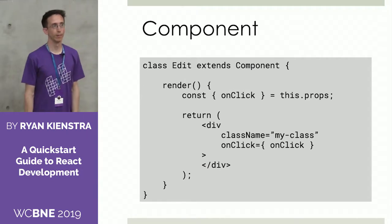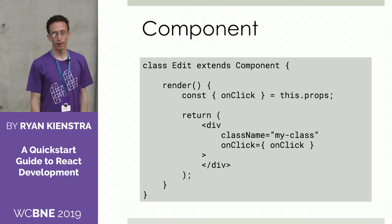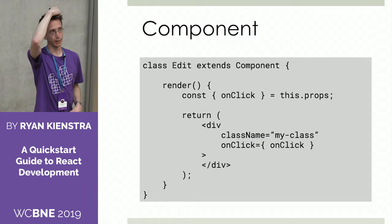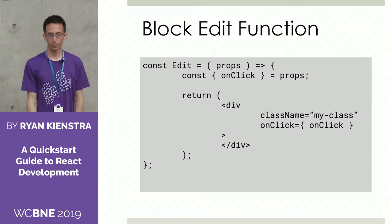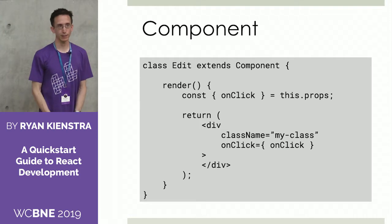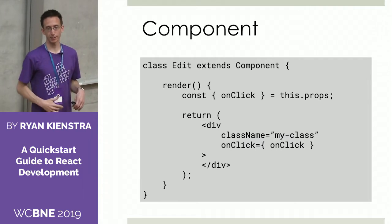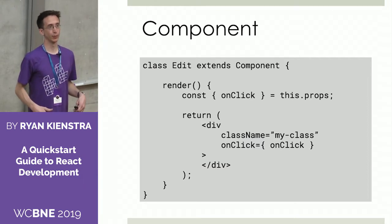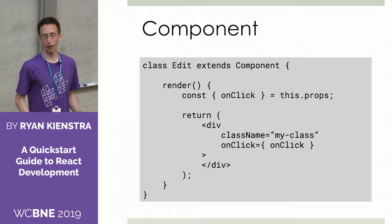This is another way of writing the exact same thing. As an alternative, you can have a class, and this is the edit function. In the render method, it's doing the same thing — basically the same as the return line. You have the render method, and then you just return that same JSX. This is pretty unique to ES6, and it's actually not necessary to use classes like this unless you're using state. So for your first block, you might not need this, but as you're looking at Gutenberg blocks, you should be aware of how it works.